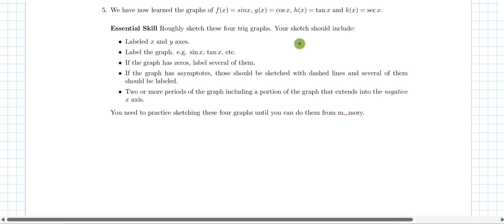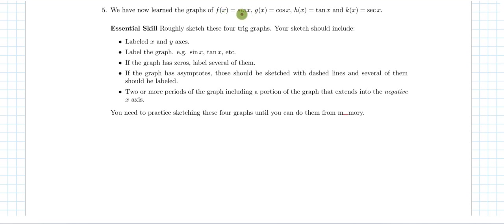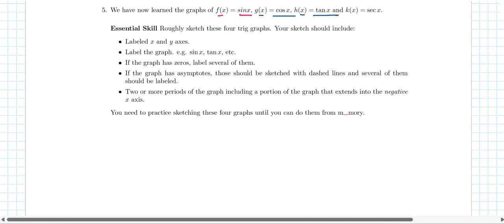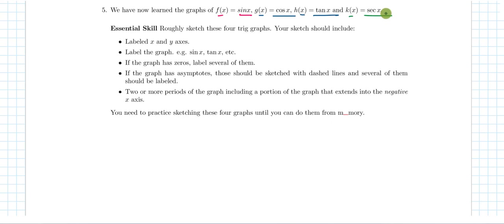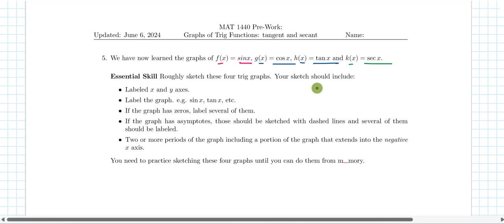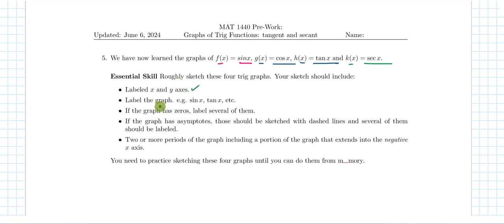Now I want you to roughly sketch the four graphs we've learned: f(x) = sin(x), g(x) = cos(x), h(x) = tan(x), and k(x) = sec(x). I'm not looking for perfection — I want you to label your axes, label your graph, label several zeros, and sketch and label any asymptotes. Practice until you can sketch each from memory.